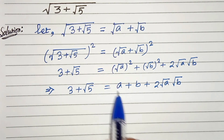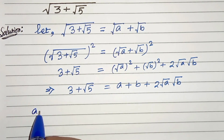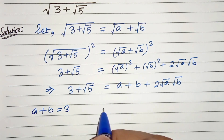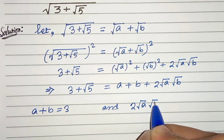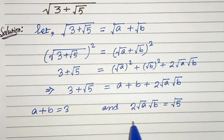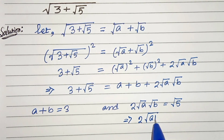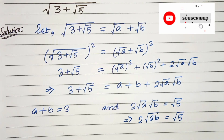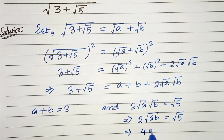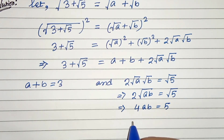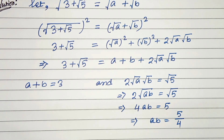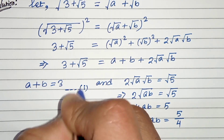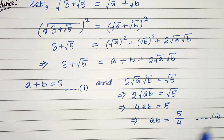Now let's compare both sides. On comparing both sides, we can write a plus b equals 3 — that is equation 1. And 2 root a root b equals root 5, which means 2 root ab equals root 5. If we square both sides, we get 4ab equals 5, so ab equals 5 by 4 — that is equation 2.